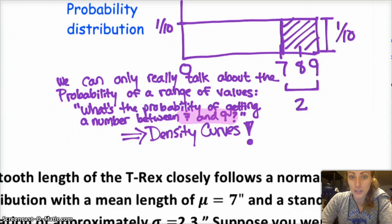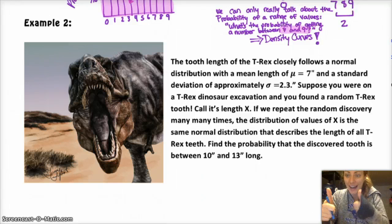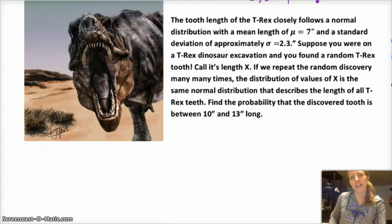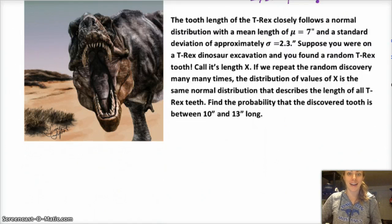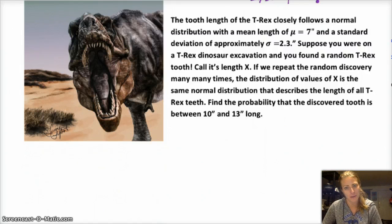Alright, let's try an example. I recommend you try the example first and then go through my solution. Good luck! You can pause it now, and then I'll show you the answer in a second. Alright, so we've got a T-Rex tooth length. Follow normal distribution with a mean of 7 inches, standard deviation of about 2.3 inches. Suppose you're on a T-Rex dinosaur excavation and you found a random T-Rex tooth. Call its length x. So that's our random variable. If we repeat the random discovery many many times, the distribution of values of x is the same as the normal distribution of teeth.